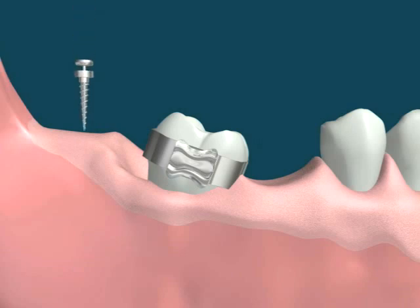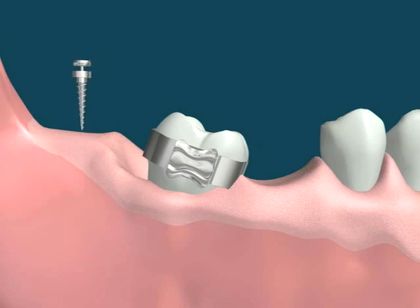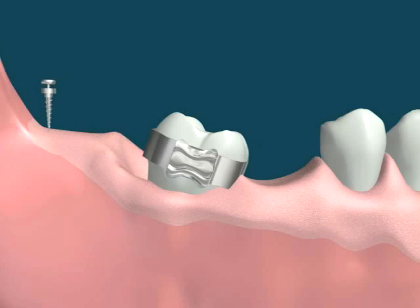An orthodontic molar band is placed on the drifted tooth, which will act as a secure attachment. An orthoimplant is drilled in the posterior region, which will act as an anchorage.